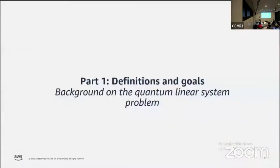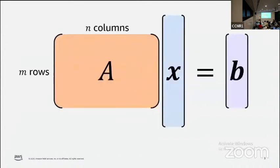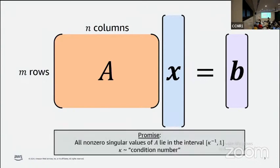To begin, I'm going to lay out the definition of the quantum linear system problem. The problem is related to solving a system of linear equations where A is an m by n matrix containing the coefficients of m linear equations on n variables. We'll assume A satisfies a promise on its singular values. In particular, all non-zero singular values of A will lie in the interval between 1/κ and 1, where κ is related to the condition number of A.